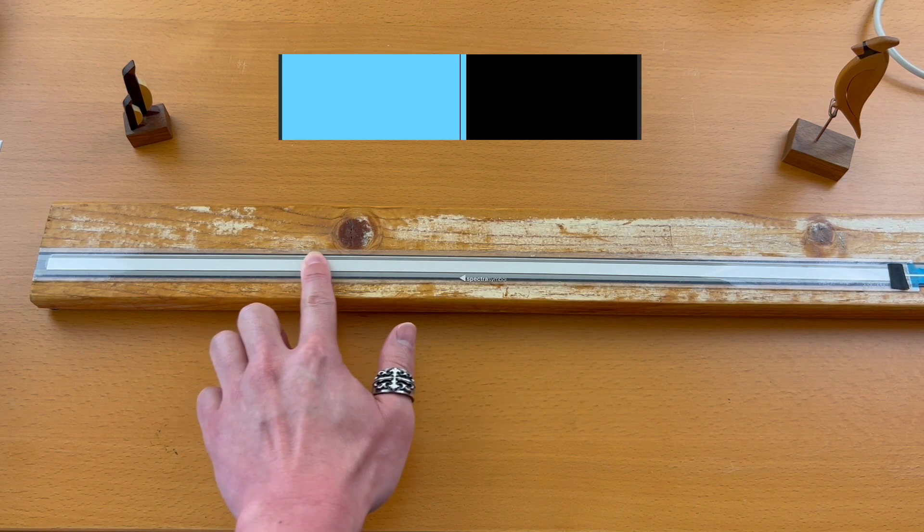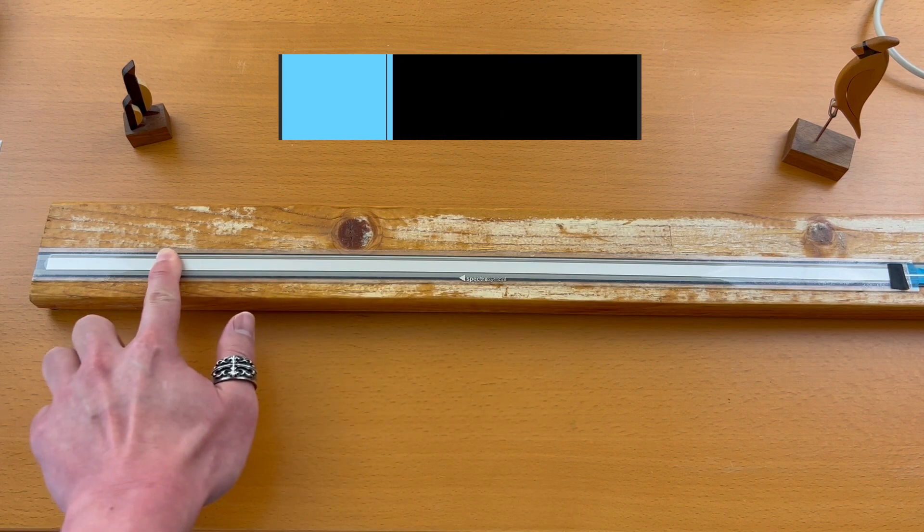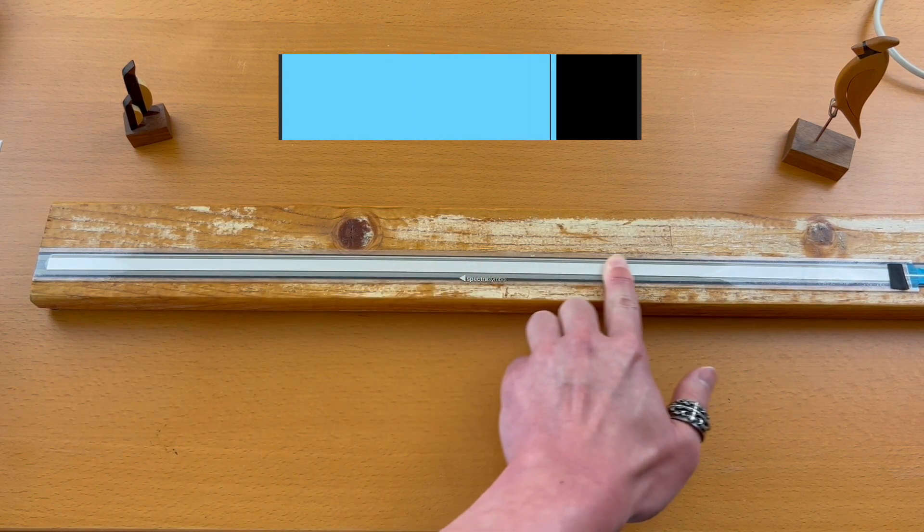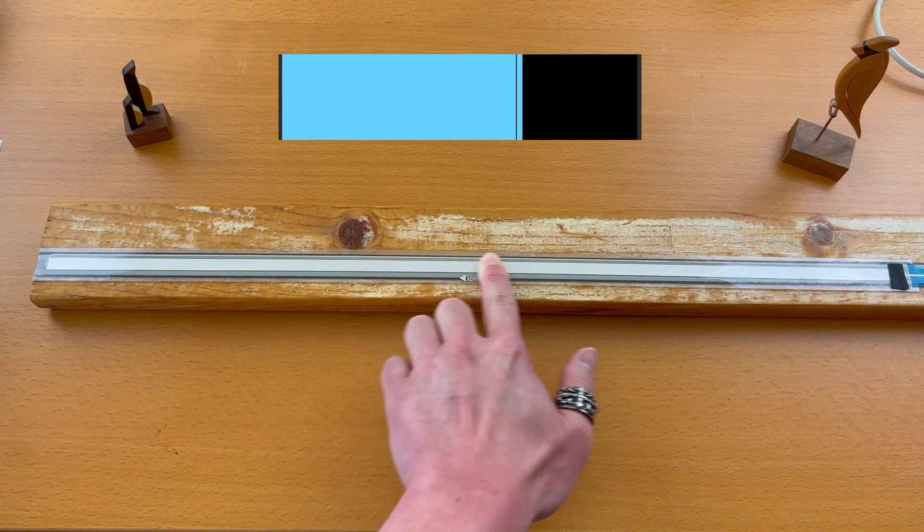This is a ribbon sensor. It can detect the finger position and we can send that data to a computer via Arduino. Then we can map that finger position data to a synthesizer. Let's map it to a pitch.